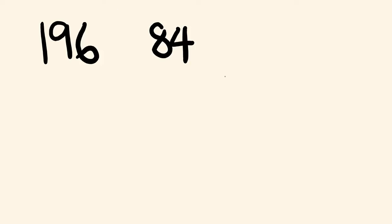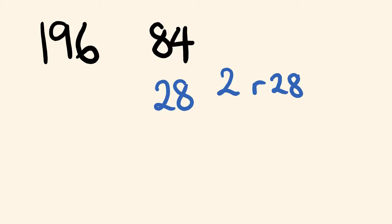So 84 into 196 — 84 goes two times, because 84 times 2 is 168. This leaves a remainder of 28. Now it's this remainder that we're going to be worried about for the next step. We're going to move this remainder on to the next step. So 28, we're moving on to the next step. The other part we move to the next step is the smallest of our numbers — the ones we divided. In this case, that was 84, the smallest of 196 and 84.